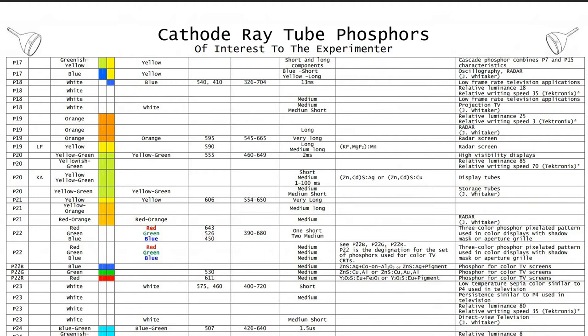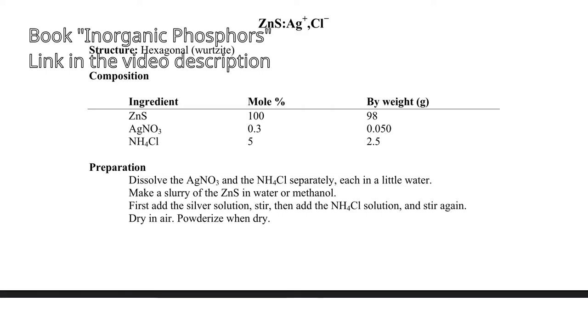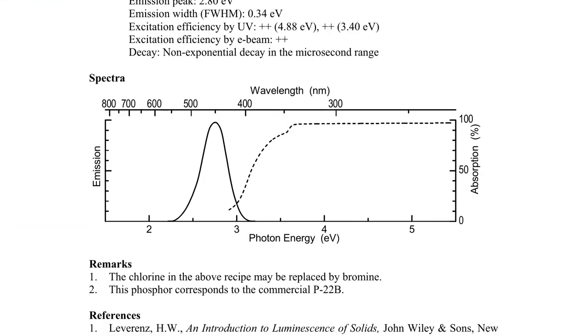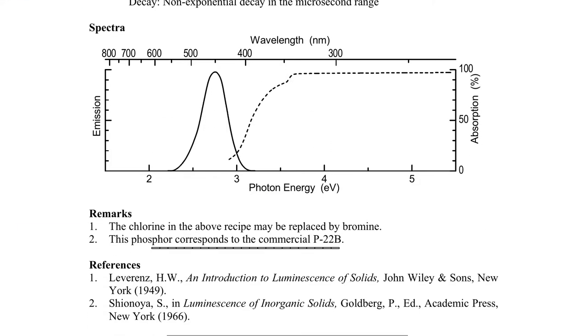Today, we are going to make P22B, the blue phosphor, which, according to the Inorganic Phosphorus book, is silver-doped zinc sulfide.